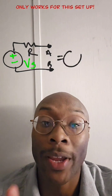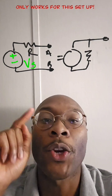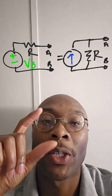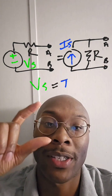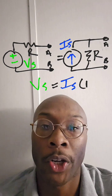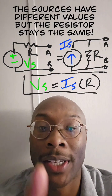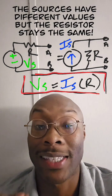that resistor can now be put in parallel with a new current source between A and B, and the current and voltage values stay the same. You're going to turn the voltage source into a current source, but the resistor value stays the same.